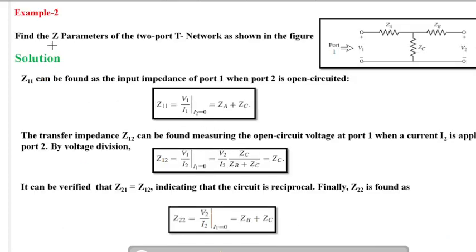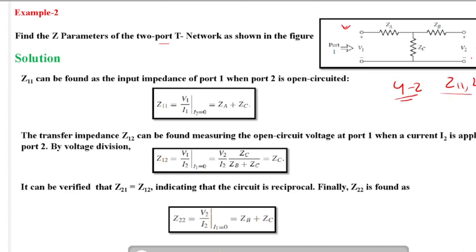Next, we will solve a question: find the Z parameters of a 2-port network. Given the 2-port network, we need to find the Z parameter matrix. For a 2-port network, there will be 4 Z parameters: Z11, Z12, Z21, and Z22.